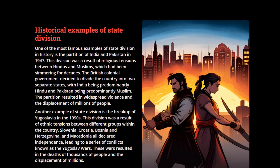Now, historical examples of state division. One of the famous examples is the partition of India and Pakistan in 1947. This division was a result of religious tensions between Hindus and Muslims which had been simmering for decades. The British colonial government decided to divide the country into two separate states, with India being predominantly Hindu and Pakistan being predominantly Muslim. The partition resulted in widespread violence and the displacement of millions of people.